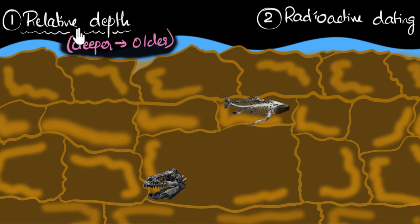And why is it called relative? It's called relative because we are comparing the depth of one fossil with respect to another, right? This is deeper compared to this. So since we are comparing the depth, we call that as relative. So relative basically means comparing. So this is one way in which we can date the fossils.